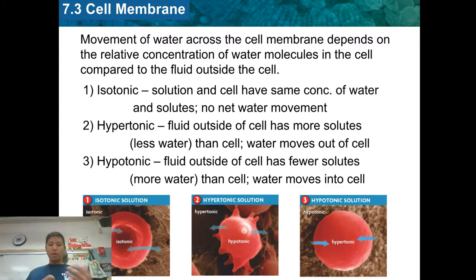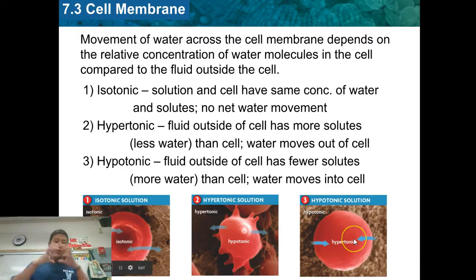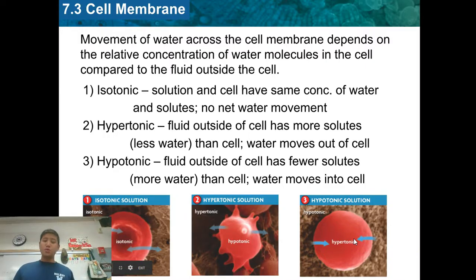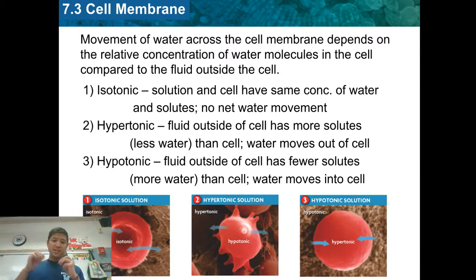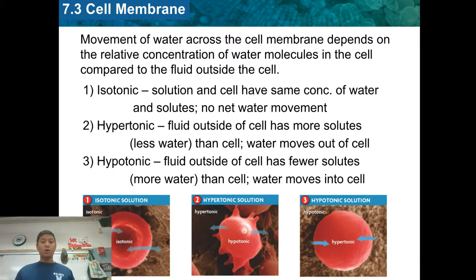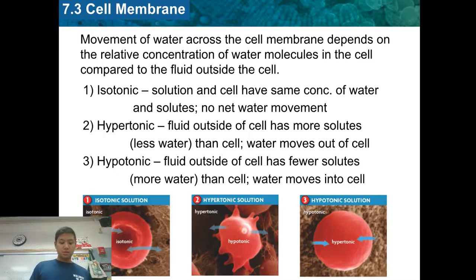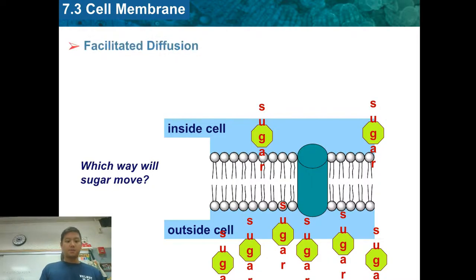Hypotonic — the way I remember this is hypotonic gets big like an O. This is when you have a lot of salt inside the cell. Water goes where the salt is, so the water is going to go inside the cell in this scenario, causing the cell to swell.